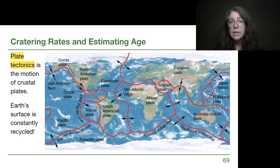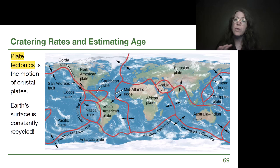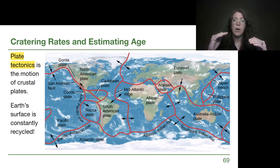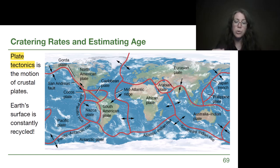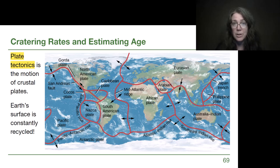Plate tectonics—often covered in middle school or high school Earth science—is the motion of big plates of crust moving around in different ways. It can cause rift zones in the middle of the ocean; when a continental plate meets an oceanic plate there's a subduction zone where we get renewal. Two continental plates crashing together give us things like Mount Everest and the Himalayas. Earth's surface is constantly being changed and recycled, so we can't count craters as an accurate age measurement.